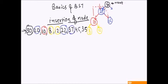Now comes node 37. At 30, 37 is greater than 30, so it has to be on the right hand side. Is there anything on the right hand side of 30? No. So we straightforwardly add 37 as the right child of 30.